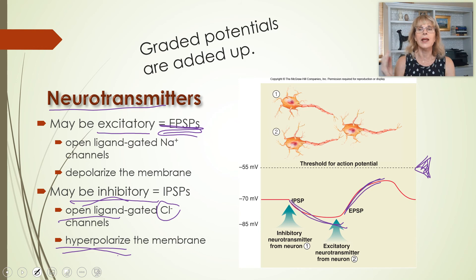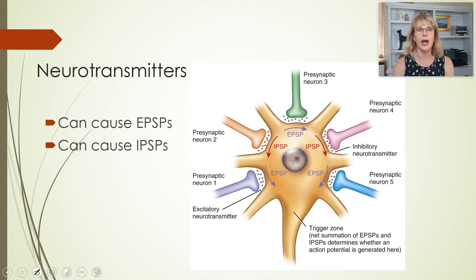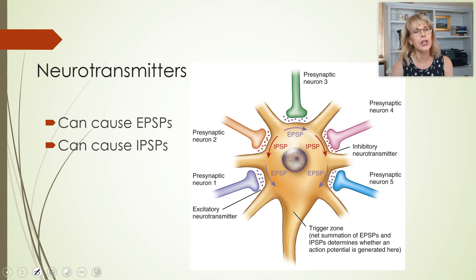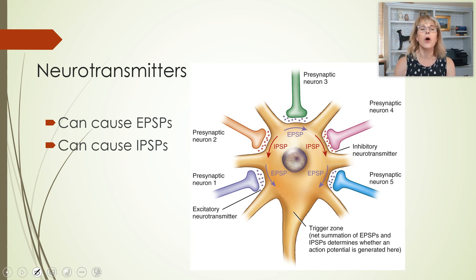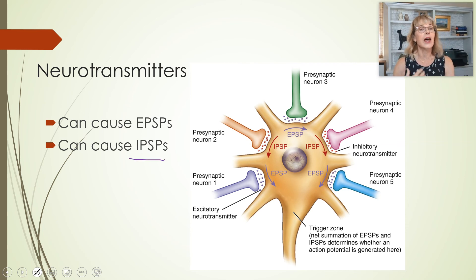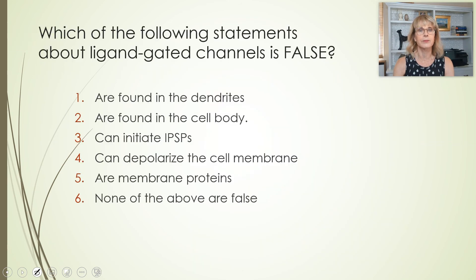Inhibitory neurotransmitters will make it less likely for a cell to send out its own action potentials. A neurotransmitter is considered inhibitory if it opens up a ligand-gated chloride channel. Chloride is negatively charged, so opening these channels makes the inside even more negative — hyperpolarizing the membrane. These are called IPSPs.